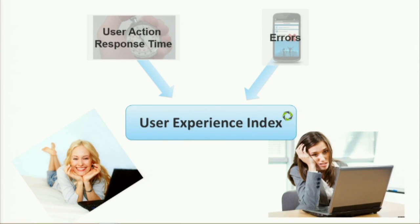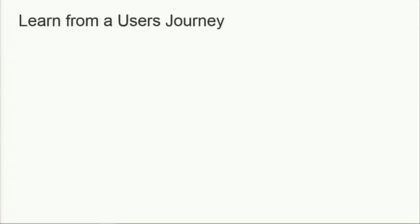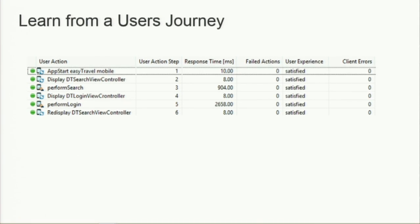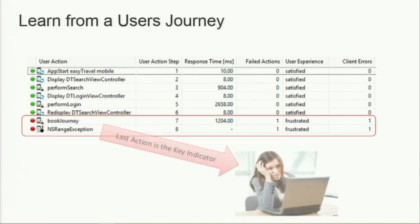So we now have two ingredients for a user experience index, but I think there is a third one — because we can learn a lot from a user's journey. A user's journey: starting the app, walking through, everything looks perfectly fine. But user behavior — what I've learned is that looking at the last action can really turn around the whole user experience. It's a key indicator, and that's just one of many behavior signals we've found in the past.